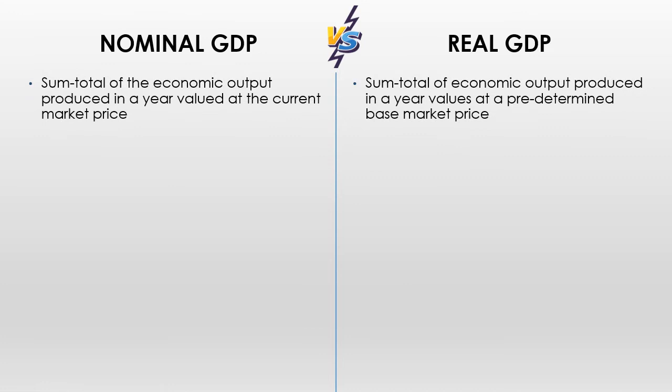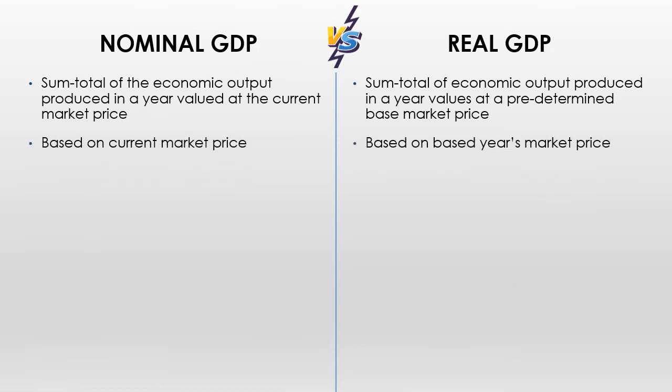Both nominal and real GDP look at total economy outputs and production within a given year, but the big difference is the price. Nominal GDP uses today's prices — here's what the price is today, here's how much that apple costs. Whereas real GDP picks what we call a base year. Based on year 2000 prices, how much is that apple today? This is helpful because we can see how much that apple in 2000 was and compare it to now using the same inflationary prices, revealing whether the actual cost went up — meaning we may not be producing more, things just cost more.